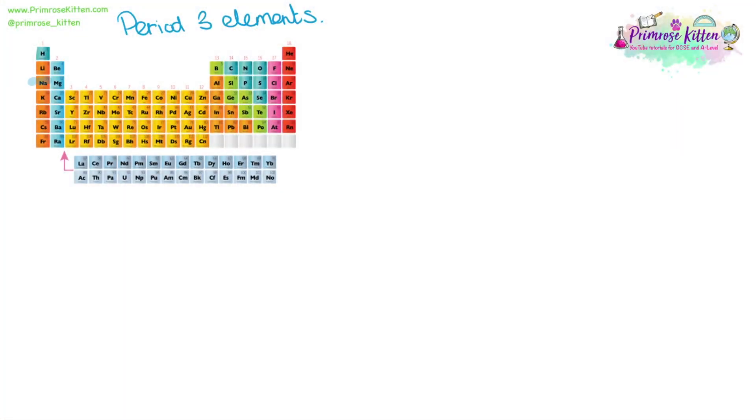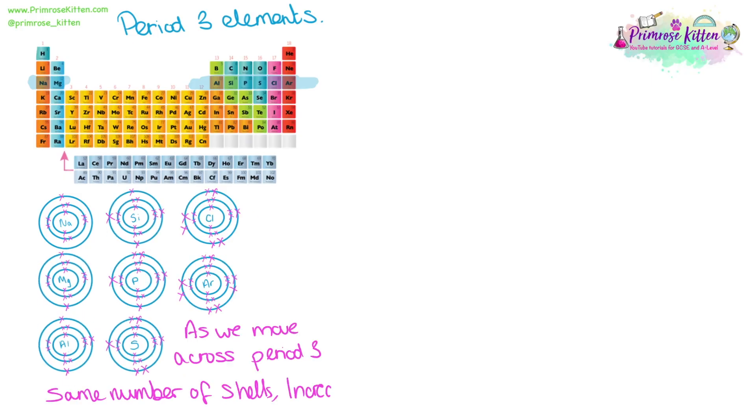Period three elements sit across here, starting with sodium and magnesium, moving across to aluminum, silicon, phosphorus, sulfur, chlorine, and argon. They will all have the same number of shells, but as we move across the period, we will get a different number of electrons in the outer shell. As the number of electrons increase, we will see a change in the properties, and that is what we're going to be looking at.